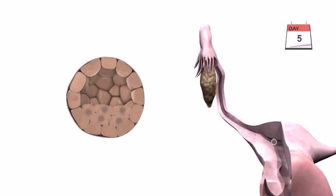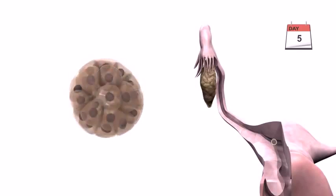Around day five after the development of the blastocyst cavity, the developing embryo is known as a blastocyst. Around this time, the zona pellucida degenerates and the blastocyst hatches into the uterine cavity ready to implant into the uterine wall.